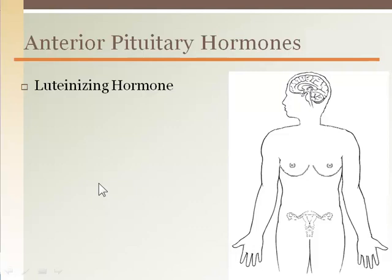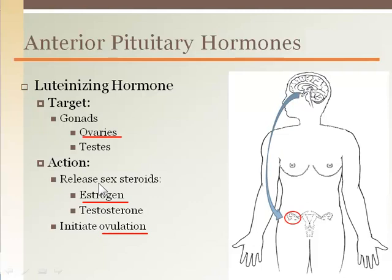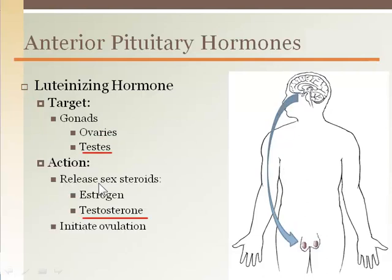Luteinizing hormone is released by the anterior pituitary gland, targeting the gonads to stimulate the release of sex steroids. In women, it targets the ovary to release estrogen, and a luteinizing hormone surge in mid-cycle causes an egg to be released. In men, it targets the testes to increase testosterone production. The hypothalamus detects circulating testosterone and estrogen levels, and when these are low, sends gonadotropin releasing hormone through the hypophysial portal system to the anterior pituitary, which then releases luteinizing hormone targeting the gonads.